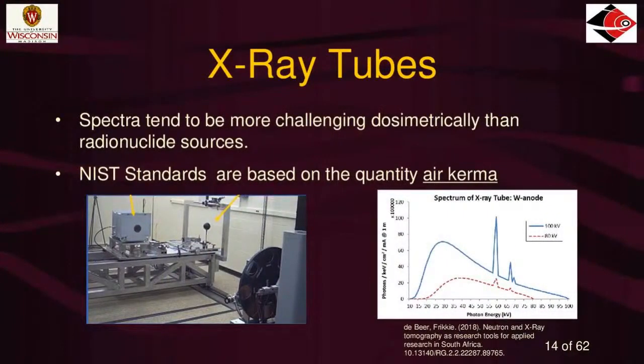The dosimetry of X-ray tubes is different from iridium-192. Spectra tend to be more challenging dosimetrically than radionuclide sources. Radionuclide sources have the same energy lines coming out of each one — the same gamma rays. But X-ray tubes are a little more challenging because they could be slightly different every day. The standards for X-ray tubes are based on air kerma, not air kerma strength as used for iridium.